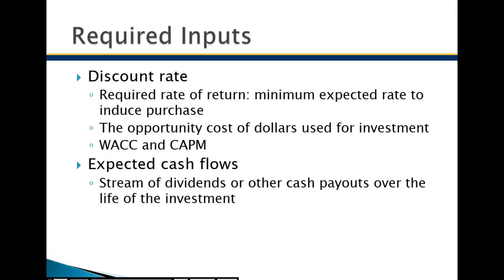For corporations valuing other companies for purchase, mergers, or acquisitions, we use the weighted average cost of capital. If I'm buying another company, I'll use my weighted average cost of capital — the cost of the funds I'm using — to discount the cash flows and see my return. I always want to do better than what I'm paying for my capital. There's also the capital asset pricing model, a common model that utilizes risk to determine the required rate of return.